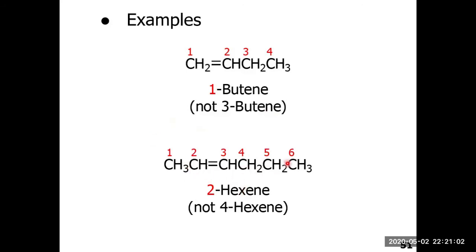For a longer alkene with six carbon atoms in the parent chain, that corresponds to hexene — we drop the -ane ending and replace it with -ene. By the second rule, we number at the end nearest the carbon-carbon double bond, which is on the left side. Counting from there: one, two, three, four, five, and six. This one is named as 2-hexene, where the locant two signifies that the carbon-carbon double bond starts at carbon number two. The name 5-hexene would be an incorrect name for this molecule.